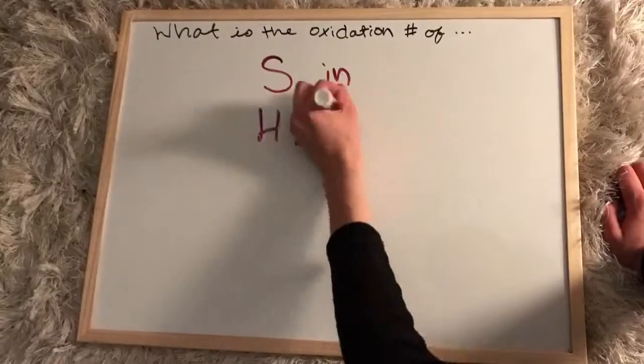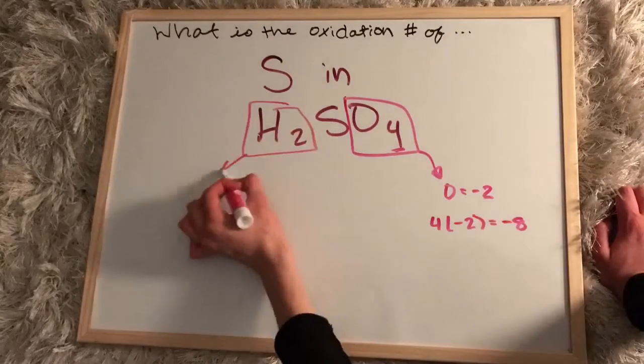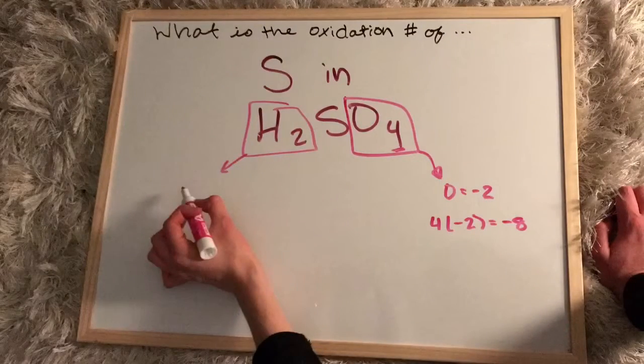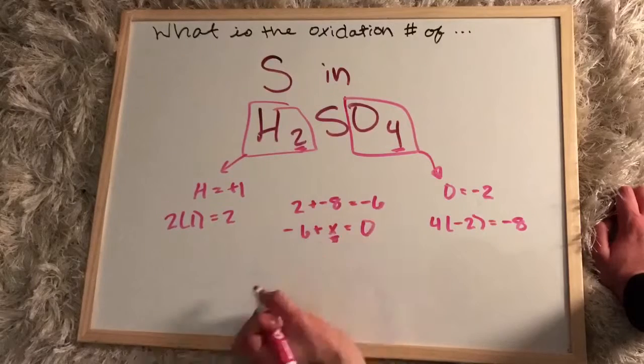Now let's move on to some compounds. In this, we have to start out with what we already know. So oxygen's oxidation number is negative two and hydrogen's is positive one. Then we have to multiply them by how many of them there are. So for oxygen, we get negative eight, and hydrogen, we'll get positive two, which we then add together to get negative six.